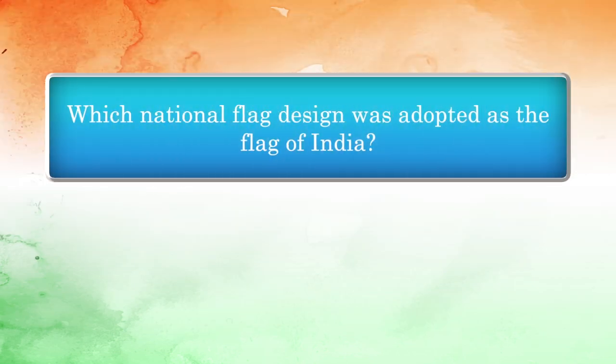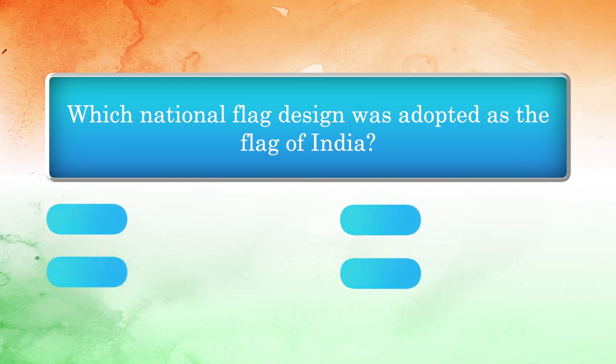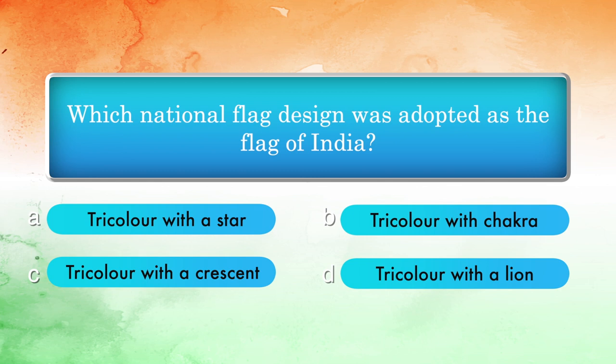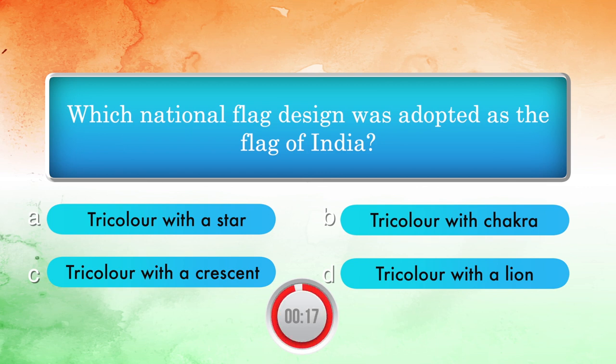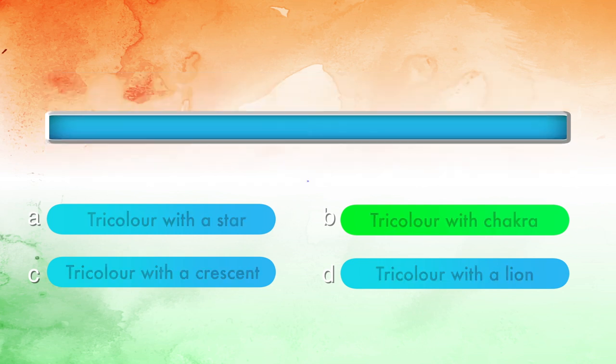Which national flag design was adopted as the flag of India? Options: Tricolour with a star, Tricolour with chakra, Tricolour with a crescent, Tricolour with a lion. Answer: Tricolour with chakra.